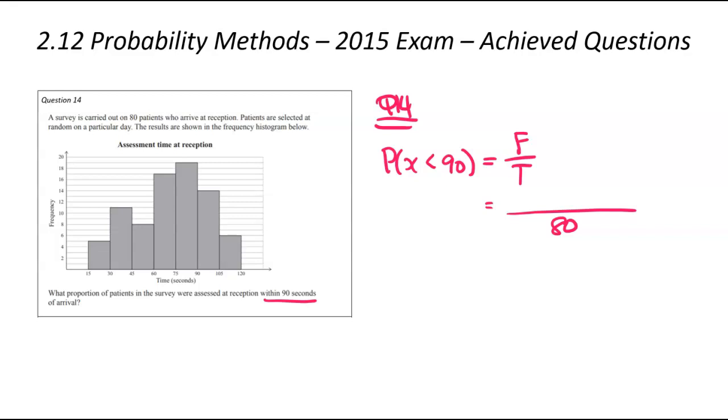Of those 80 patients, how many were seen within 90 seconds? This is where we look at our graph. The 90 seconds over here, anything less than 90 seconds would be all the bars to the left. This first bar relates to five people, then 11 people, then eight people, 17 up here.